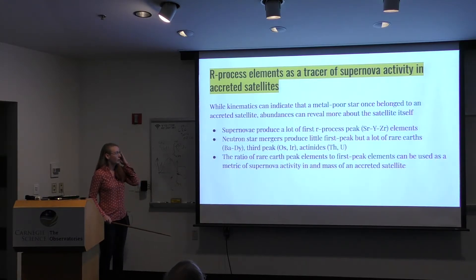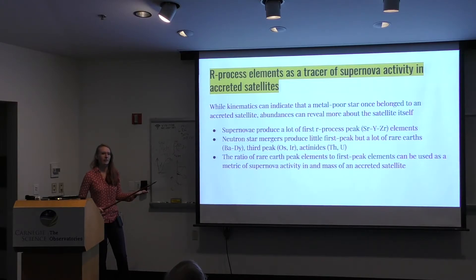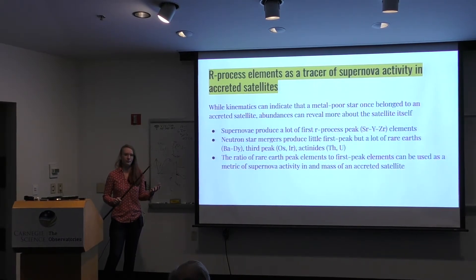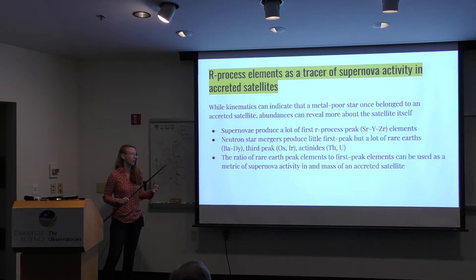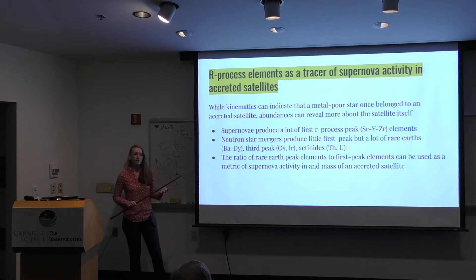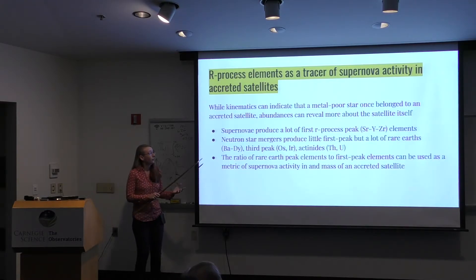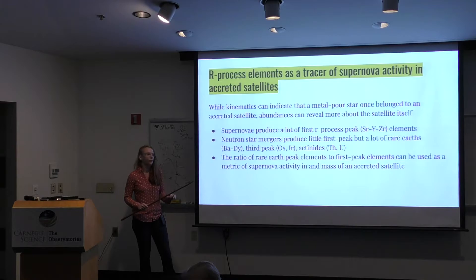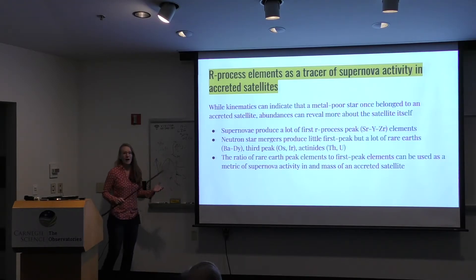Finally, I want to talk about R-process elements as a tracer of supernovae activity in accreted satellites. Crucially, while kinematics can tell you that a star belongs to an accreted satellite, abundances combined with kinematics can tell you more about the actual system itself. Key ideas: supernovae produce a lot of the first R-process peak — strontium, yttrium, zirconium — but don't have the energy to go up to the rare earths or actinides. Neutron star mergers produce little of the first R-process peak but produce all the way up to the actinides. So assuming consistent yields, we can use the ratio of rare-earth peak elements to first-peak elements as a metric of supernova activity in an accreted satellite.